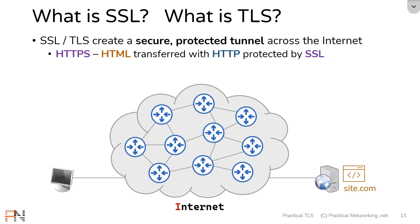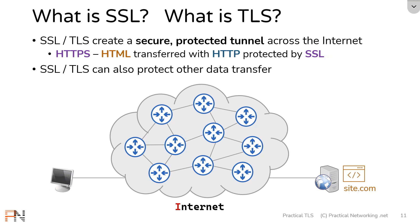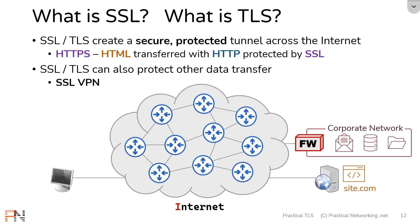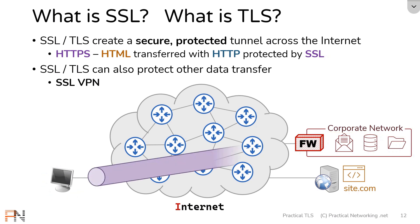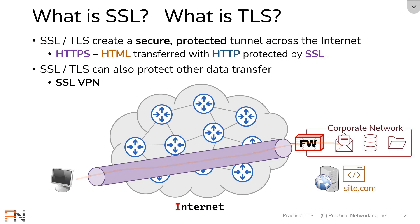But websites are not the only thing that SSL and TLS can protect — they can also protect any other data transfer. This is known as an SSL VPN. The most common use case for an SSL VPN is for a client to connect to some sort of corporate network. The client can build an SSL VPN across the internet to the corporate firewall, and now any corporate resources — like corporate email, databases, or files — can be accessed securely through this SSL tunnel.